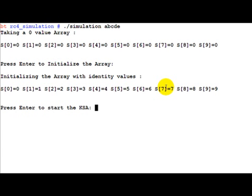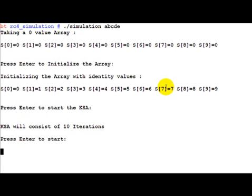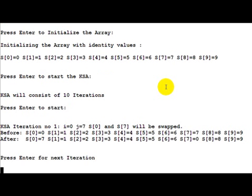Now the array is in the initialized state. After this we run the KSA. The KSA runs for as many iterations as the array size, so in this case it runs for 10 times. The simulation says 'KSA will consist of 10 iterations - press Enter to start'. From here on we start a single iteration and display the array before and after it.